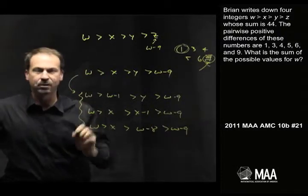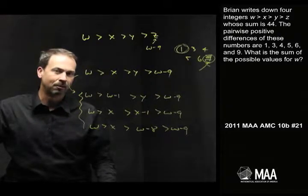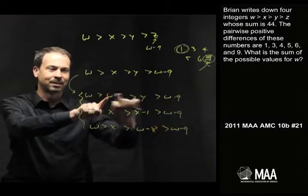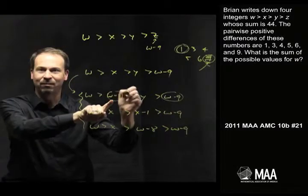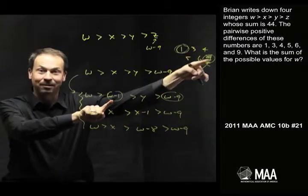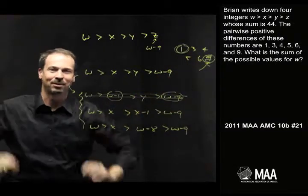Alright, three possibilities, I have no idea which case I'm in, maybe I'm in several of these cases, are all possible. Actually, think about it. Look at this first case. I see w minus 1 and w minus 9. Those two numbers differ by 8, and 8's not on my list. Aha! Out goes that possible case.